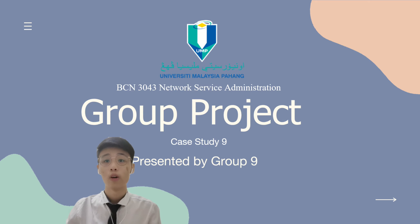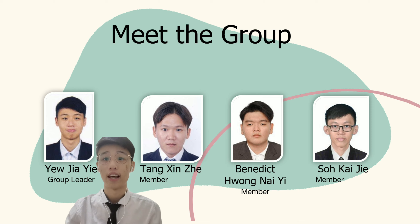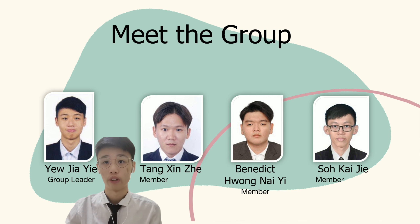Hello everyone, we are from Group 9. My name is Yew Jia Yie, metric ID CA19068. Without wasting any time, we straight away go to the introduction.